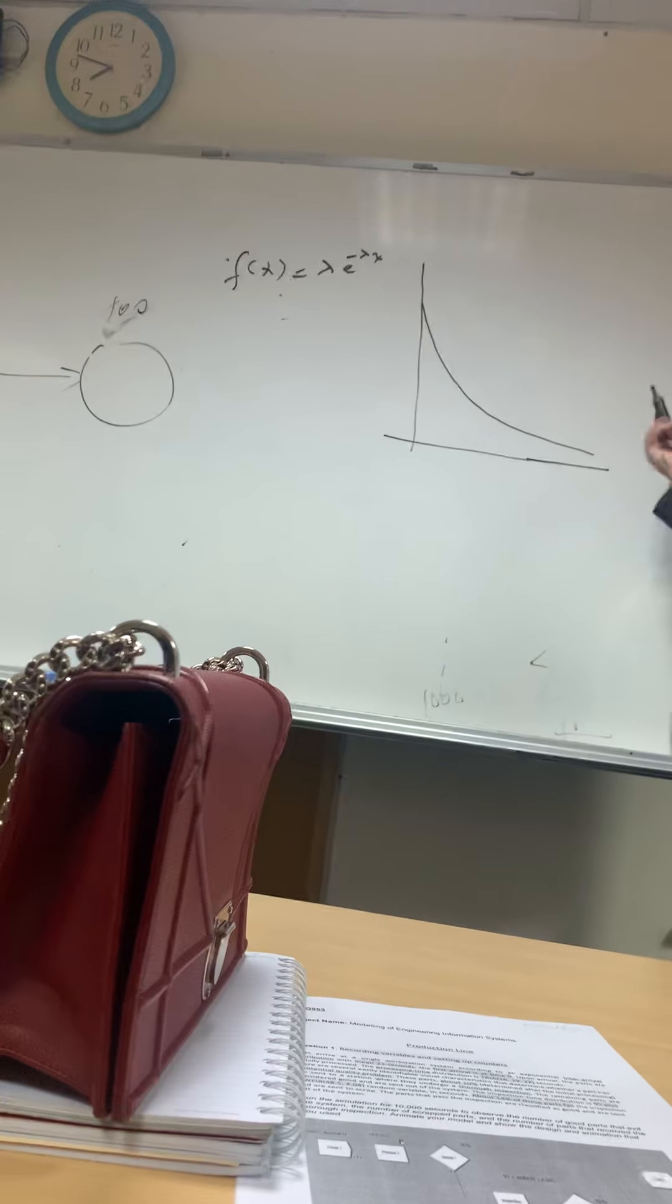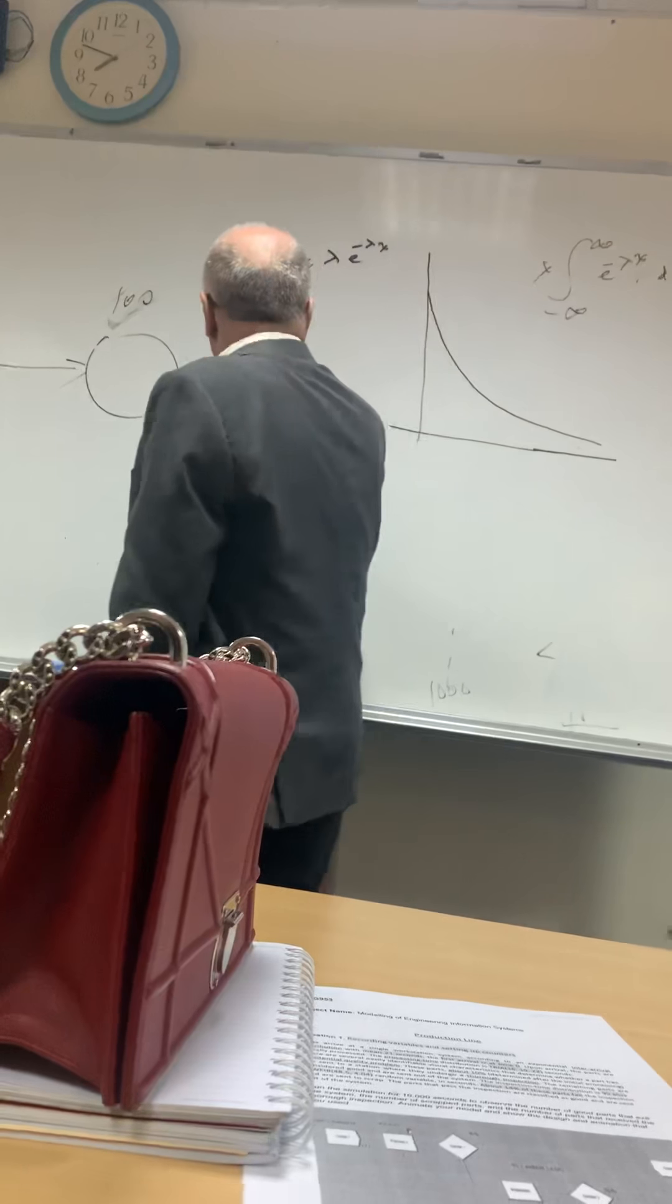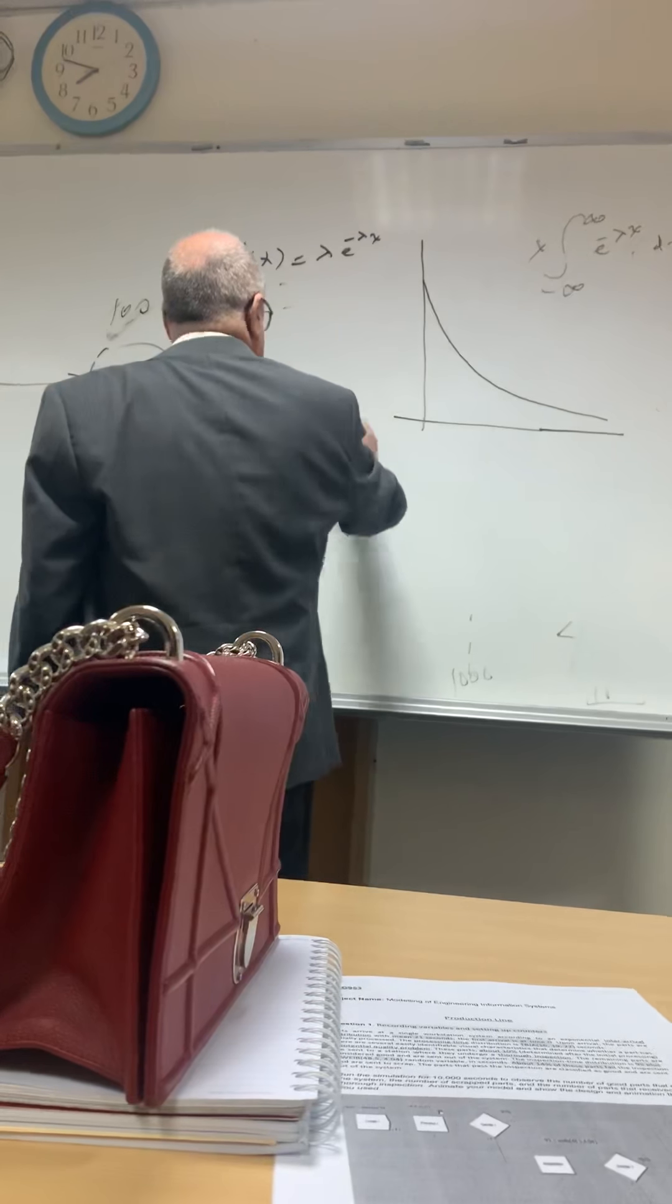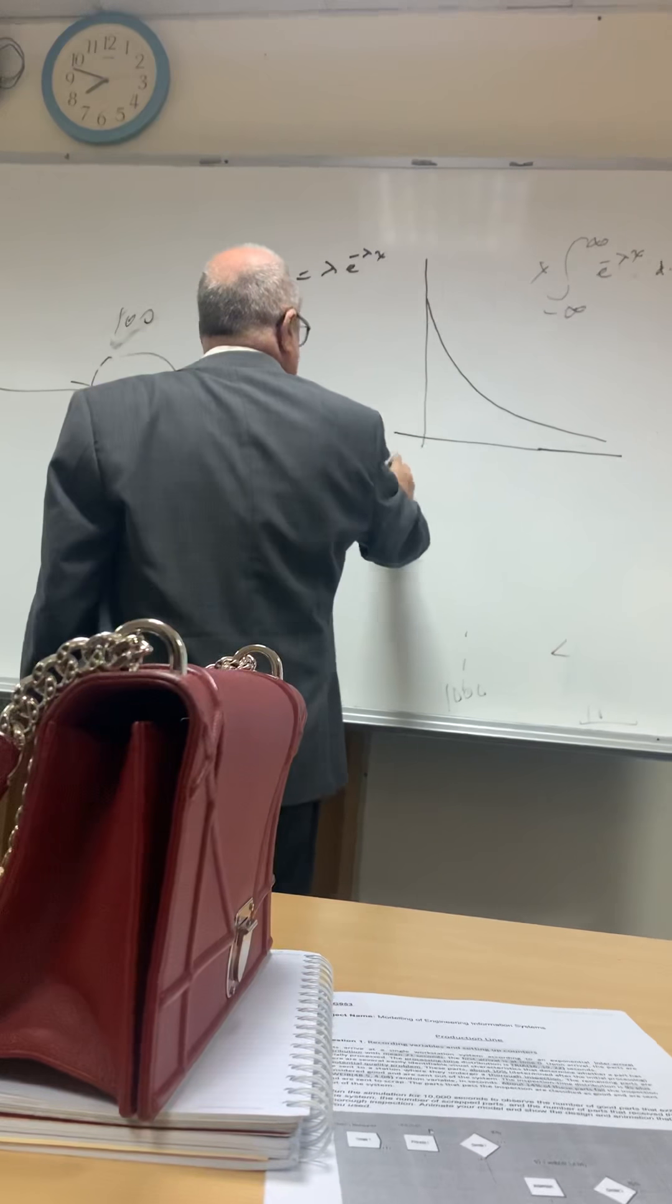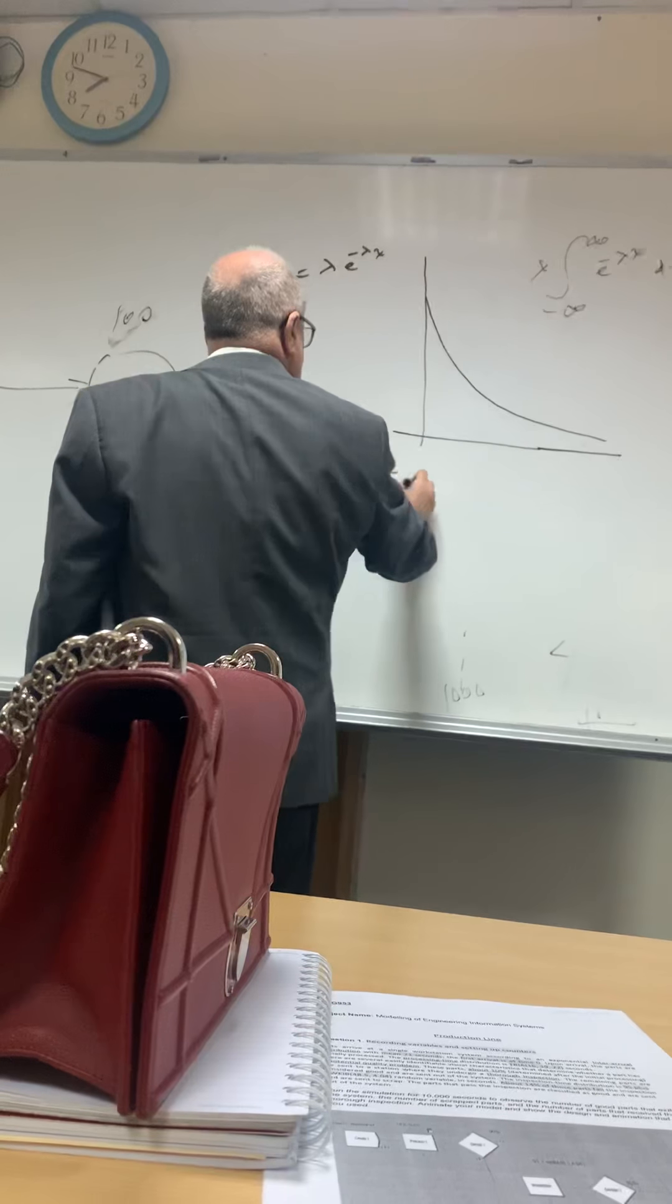But this is defined at x greater than zero, so help me. Zero to infinity e to the minus lambda x dx. It equals what? Help me. e to the minus lambda x.